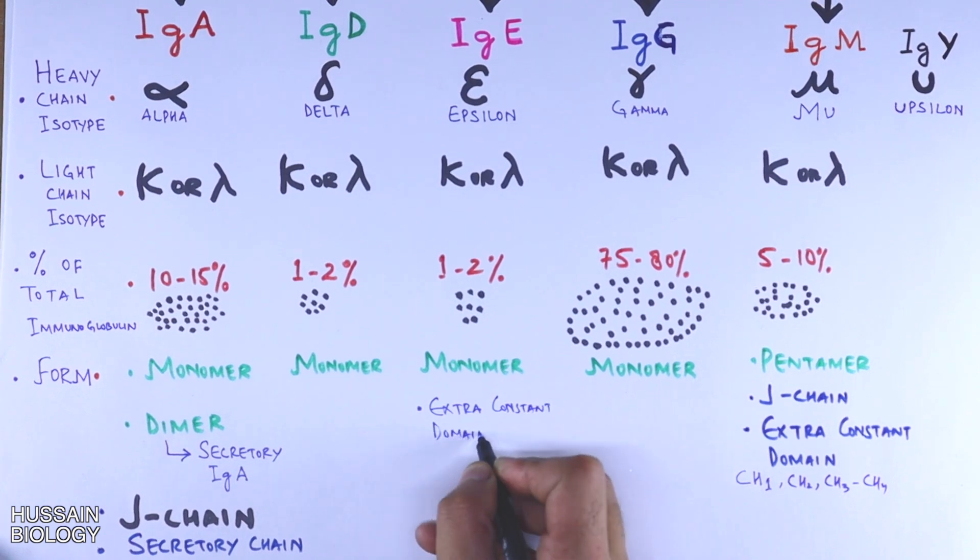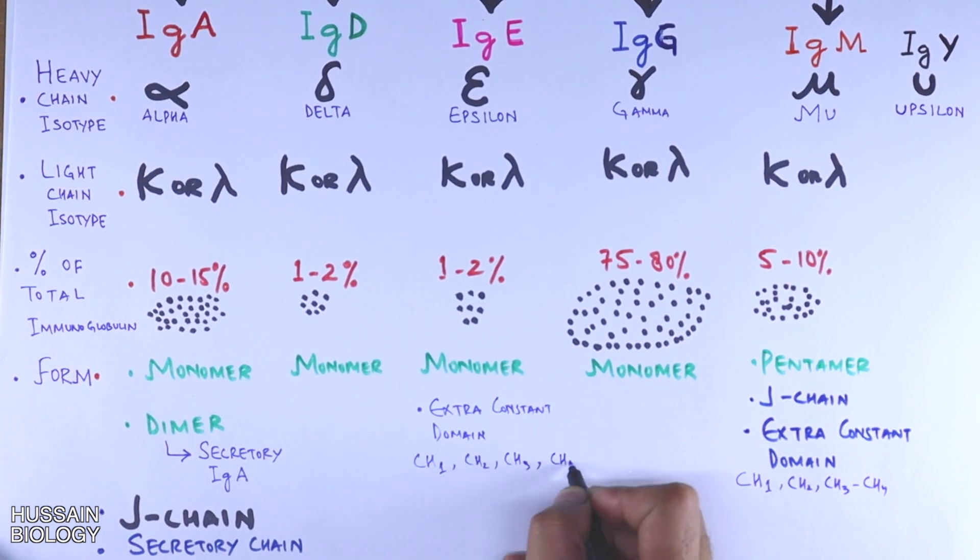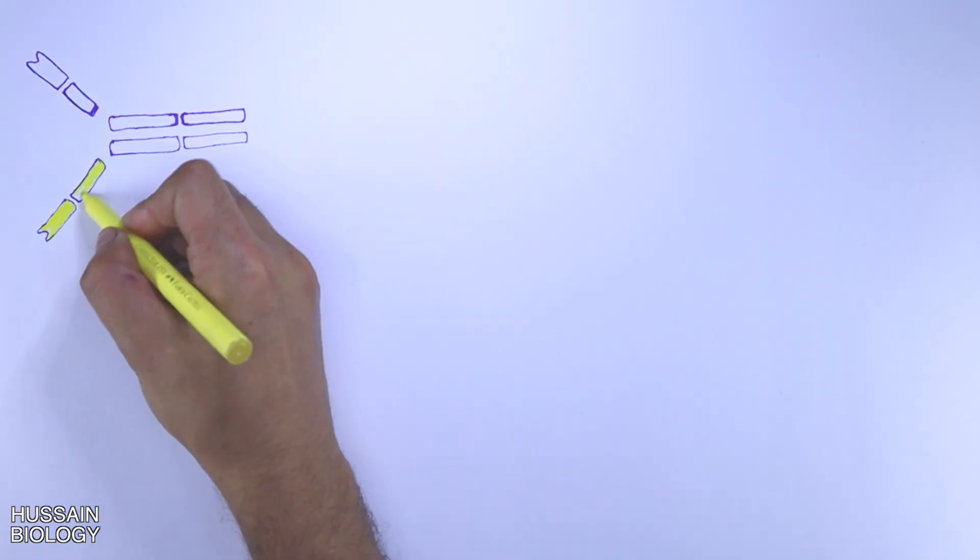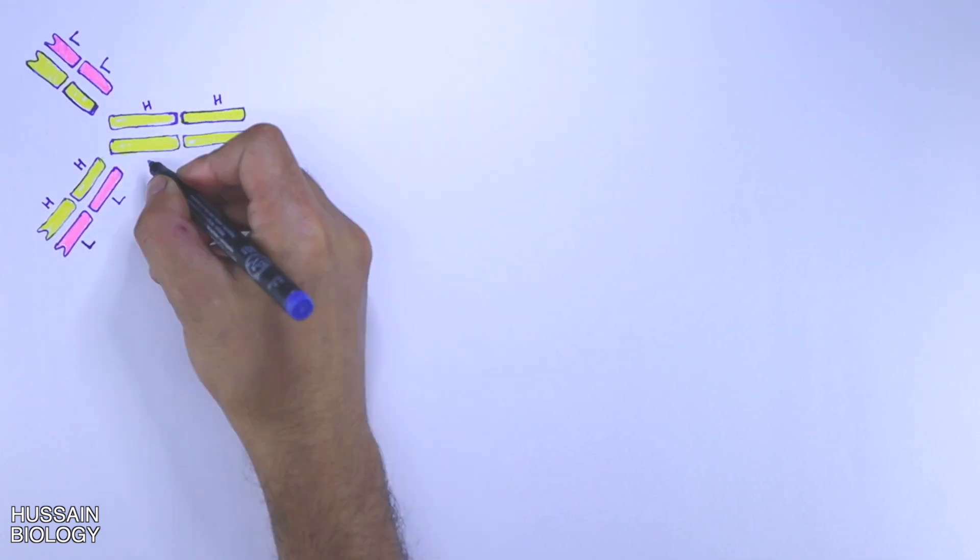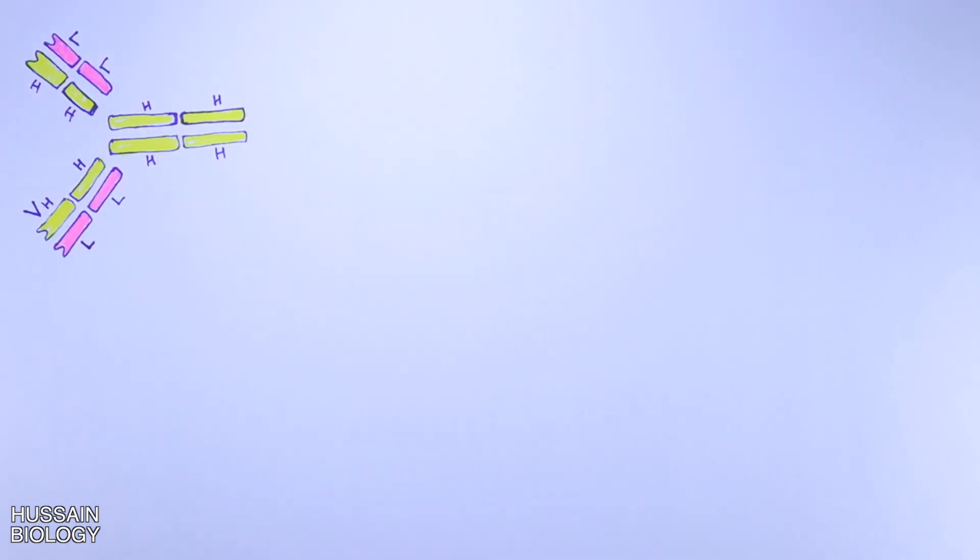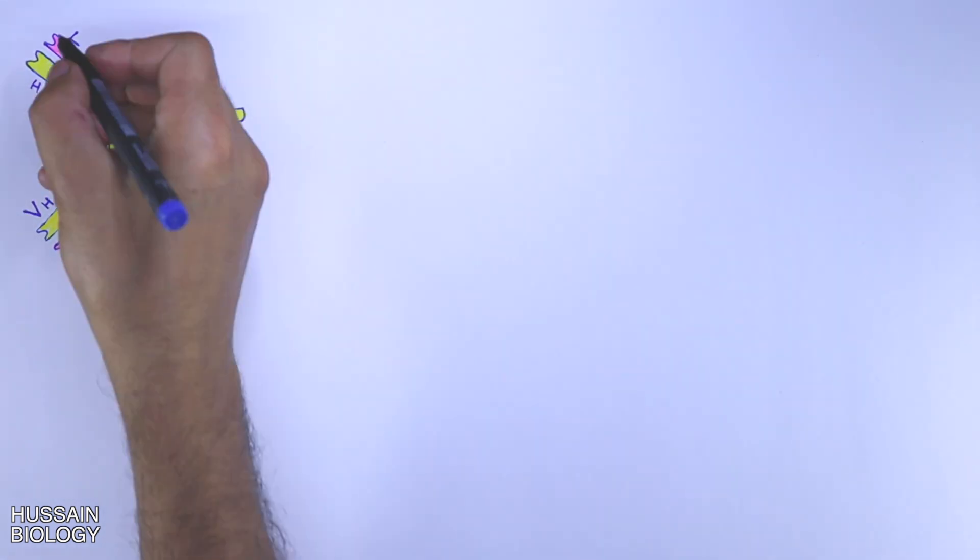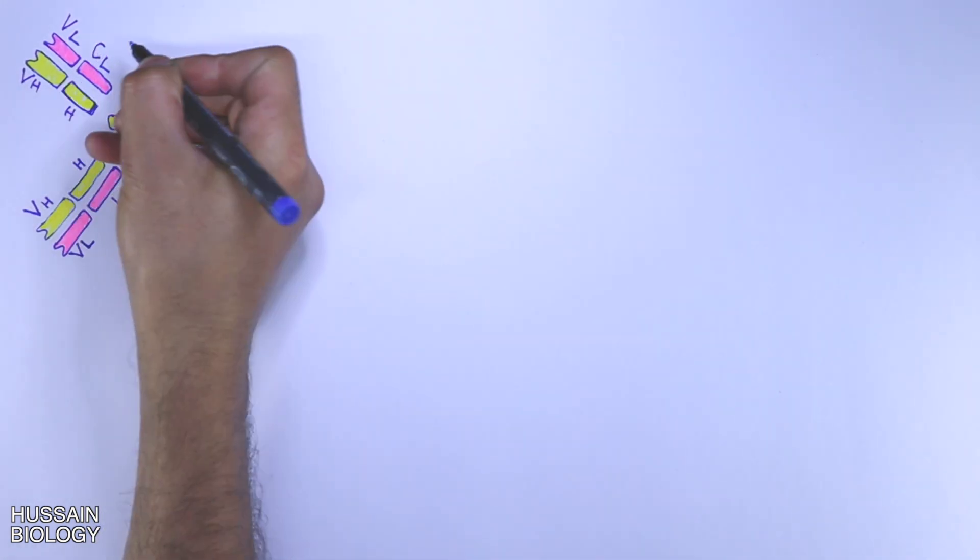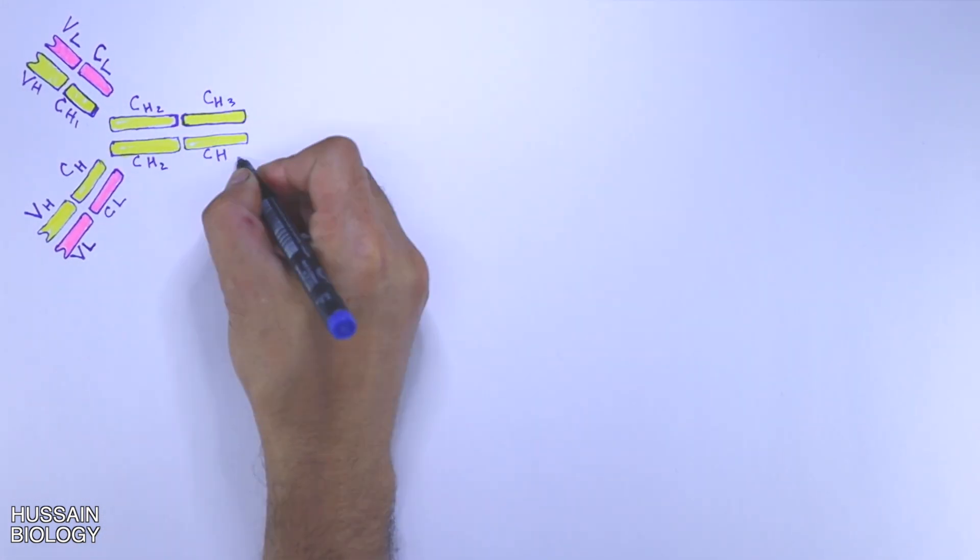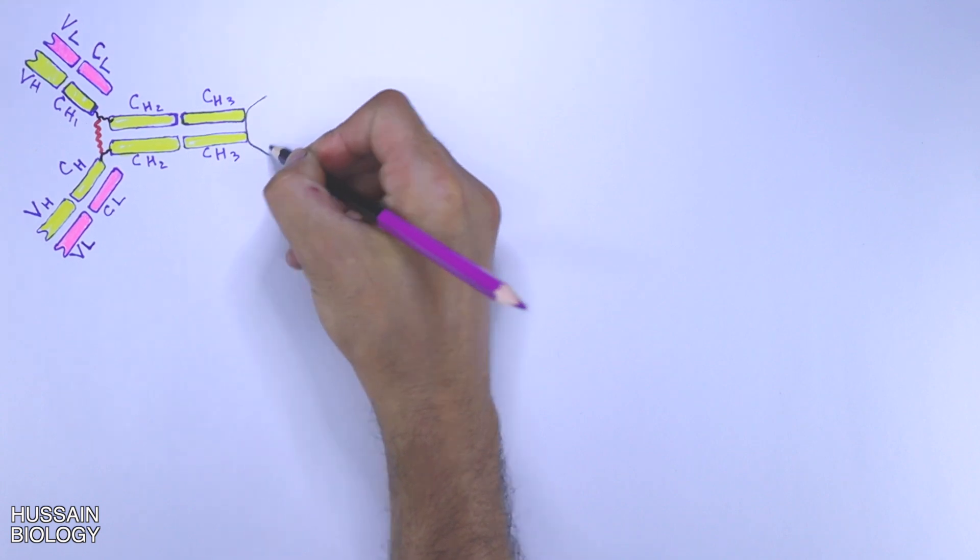which we can see in the structure of immunoglobulin E also. Now let's see the structures of these immunoglobulins. First we have the IgA immunoglobulin monomer. The yellow ones are the heavy chains and pink ones are the light chains. Top four domains constitute the variable domains as shown in the diagram, and the rest are the constant domains.